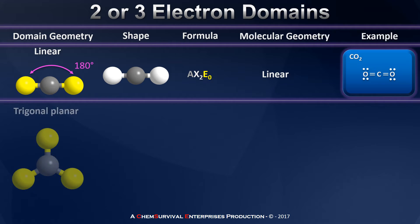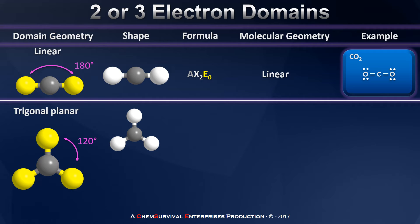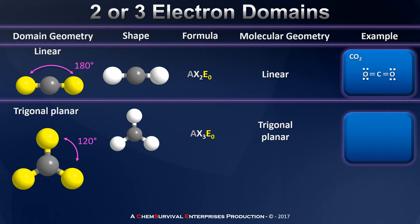Now if we go up to three electron domains, we see that trigonal planar domain geometry. In this case, we have 120 degree angles between all of the electron domains. So the shape of a molecule with an AX3E0 formula is again expected to be exactly the same as the domain geometry, trigonal planar. An example of a trigonal planar compound is boron trifluoride, in which the boron has three bonding electron domains, each to a fluorine atom.